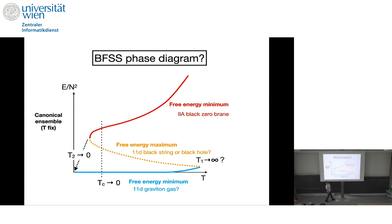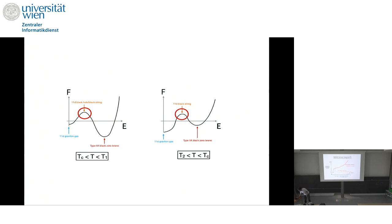And of course, it's highly non-trivial. And if other groups can study the same system, and they see consistent results, that would be very sure. And so, so this is a plot, free energy versus energy. So we have two minima. So type 2A black hole and 11 dimensional graviton gas. And in between black hole, or black string, in 11 dimensions. This is something.